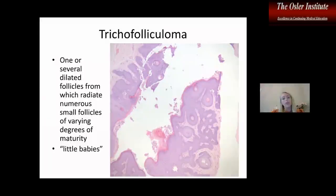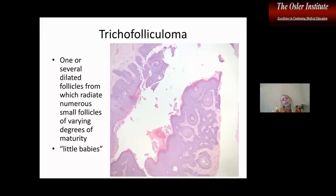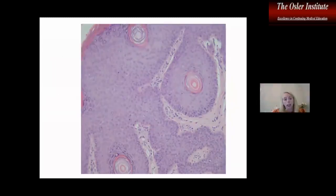Here's an example of trichofolliculoma. With that, you get one or several dilated follicles, and from that main dilated follicle you have several other tiny follicles in different stages of maturity — they can be rudimentary, or what we call the little babies coming from the mama. Someone might ask why this isn't pilar sheath acanthoma, which can look similar — like a dilated follicle with a lot of acanthosis. But the key is the babies. Going a little bit higher power, you can see them.